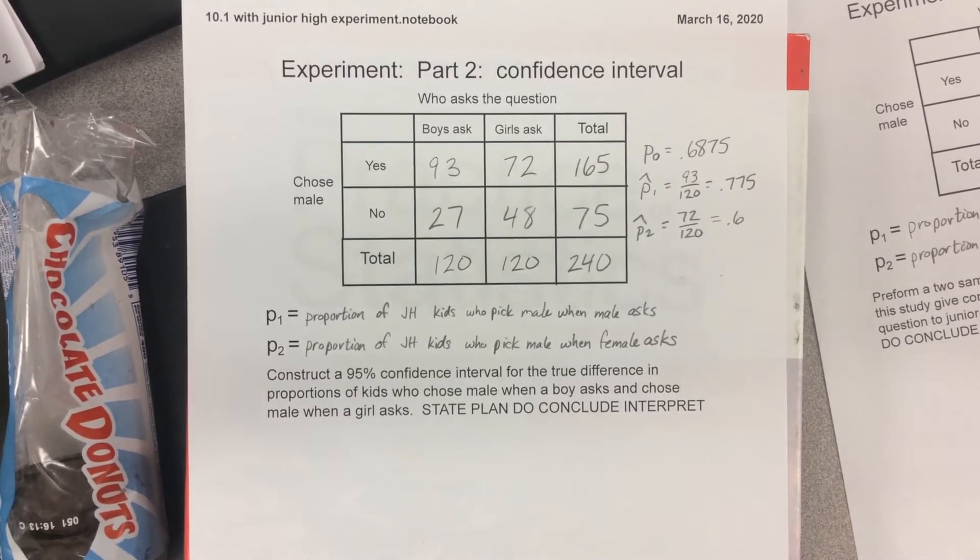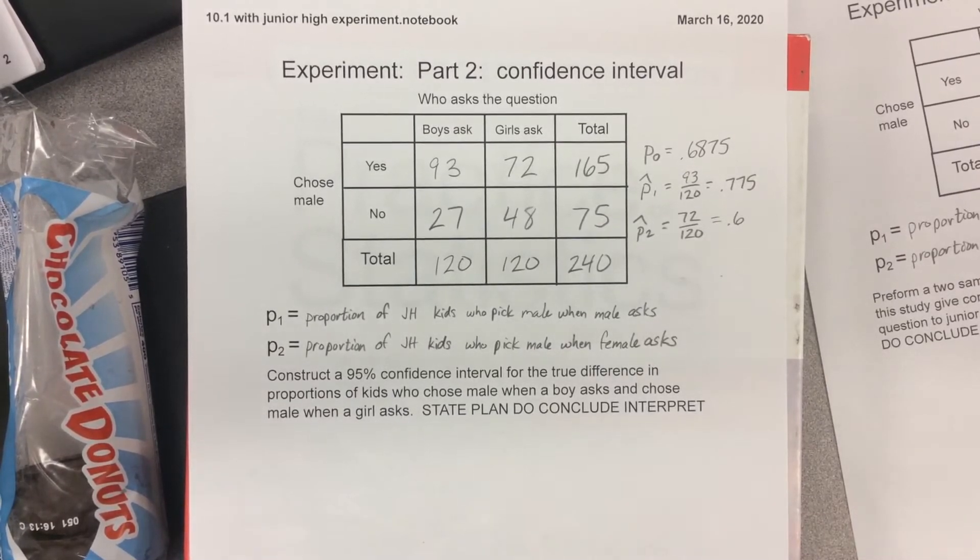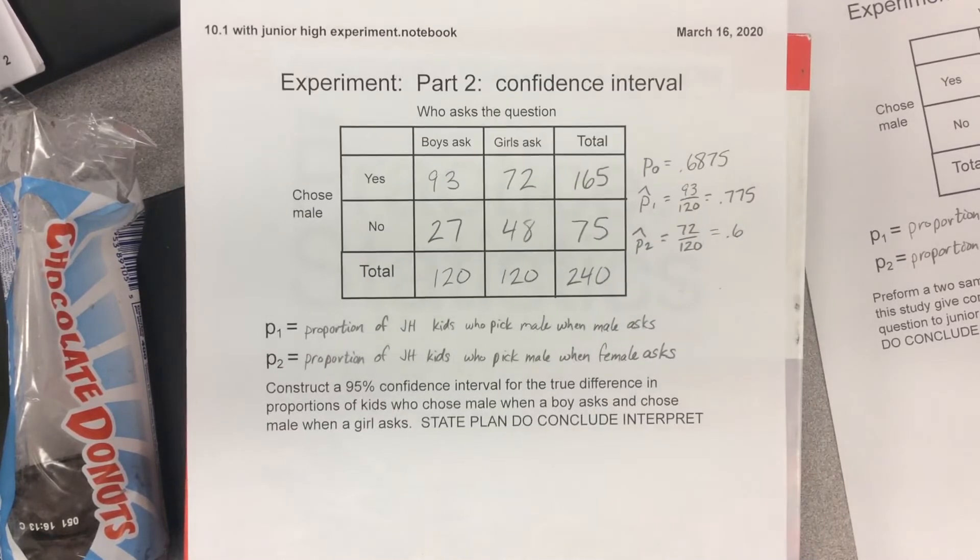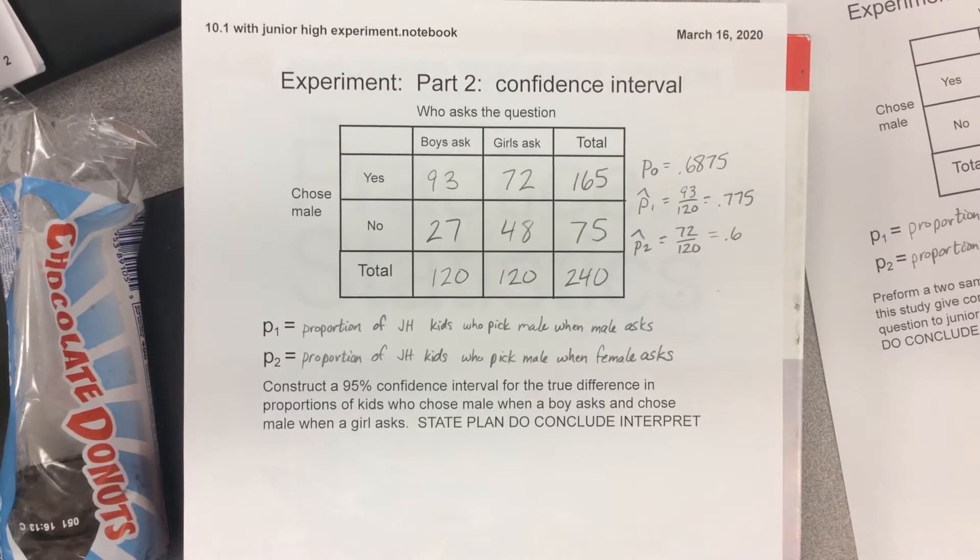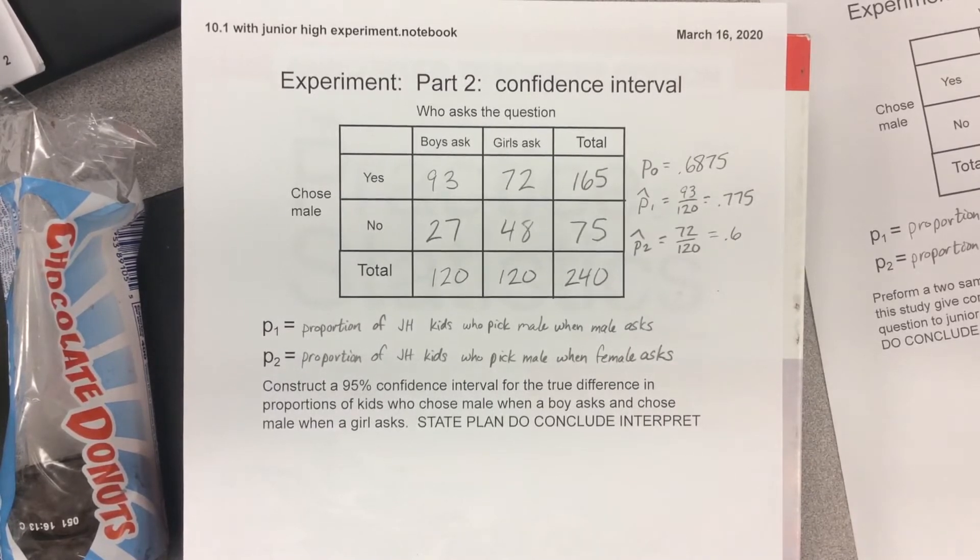Okay, this is the end of chapter 10.1, difference in proportions, and we're going to finish up the junior high experiment. This sheet should be at the end of the packet I gave you for chapter 10.1. I've filled out the information we've gone over before.